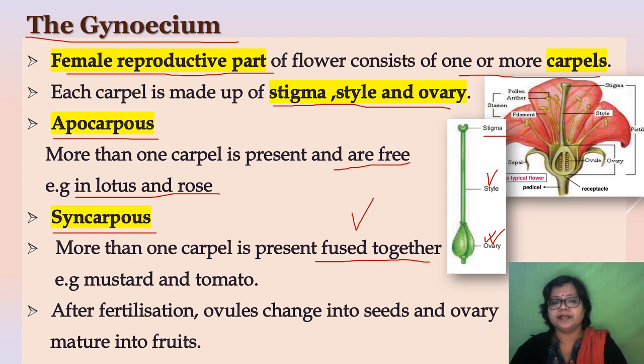After fertilization, ovules change into seeds and the ovary matures into fruit.